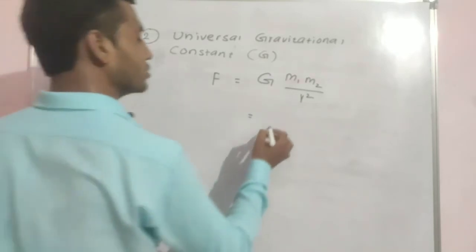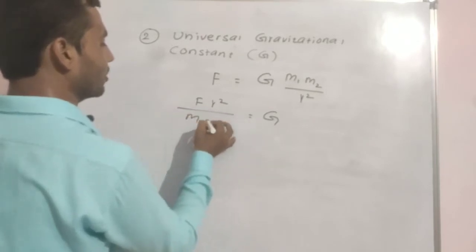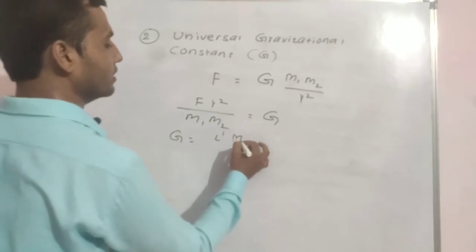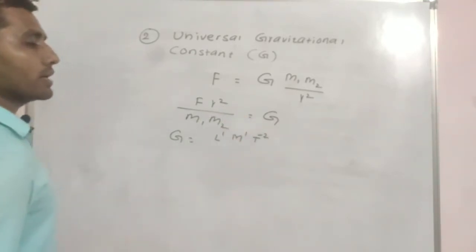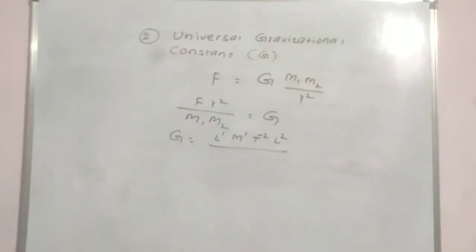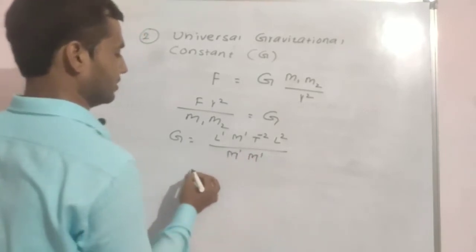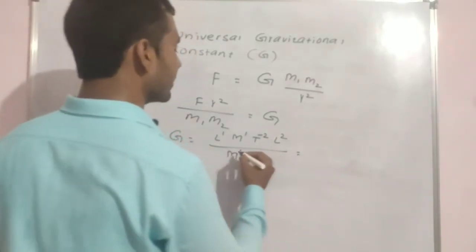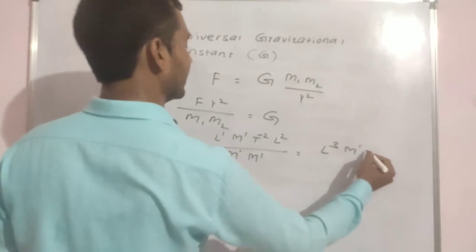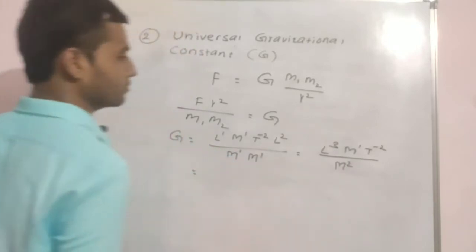So we know the formula F is equal to G m1 m2 by r square, where capital G is universal gravitational constant. So for G we can write F r square upon m1 m2. So what are the dimensions of force? That is l1 m1 t minus 2. R square is l2, m1 m2 both are masses so we write m1 and m1.